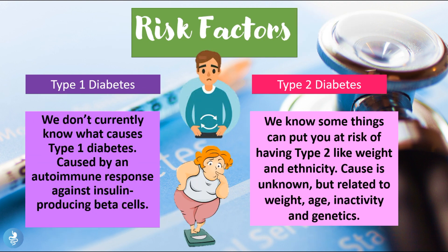Regarding risk factors: in type 1 diabetes, because we don't currently know what causes it — we just know it's an autoimmune response against the insulin-producing beta cells — we don't really know the risk factors, but scientists have found there may be some genetic association involved. In type 2 diabetes, things that can put you at risk include weight, ethnicity, overweight, inactive lifestyle, high blood pressure, and hypercholesterolemia. The cause is also unknown but is related to weight, age, inactivity, and genetics.